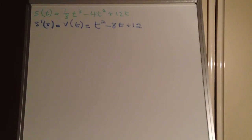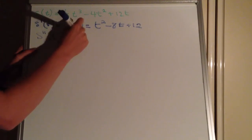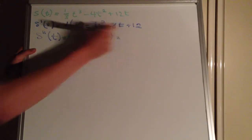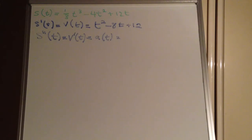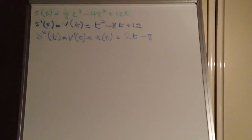Remember, velocity is just the first derivative of the displacement function, because if you had a displacement graph and took the gradient off it, you'd get the velocity. Now, s''(t) — the second derivative of the displacement function, which is also v'(t) — is the acceleration. We differentiate again to get 2t minus 8. So from that we have our velocity and acceleration functions.